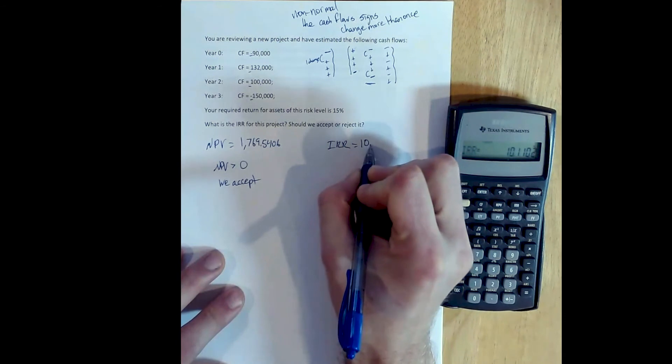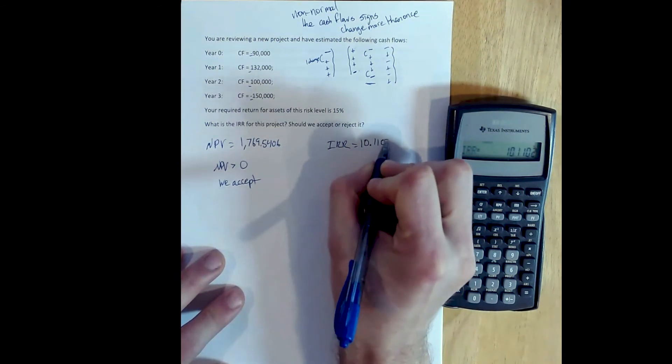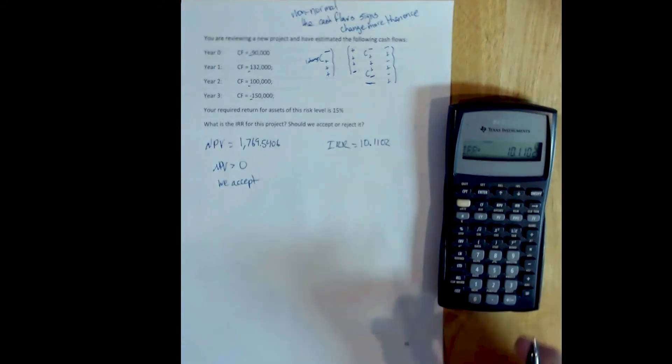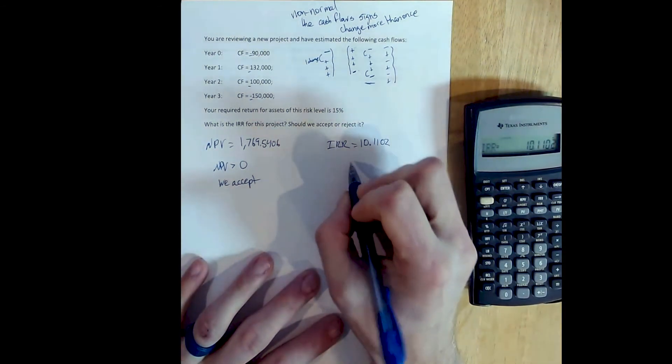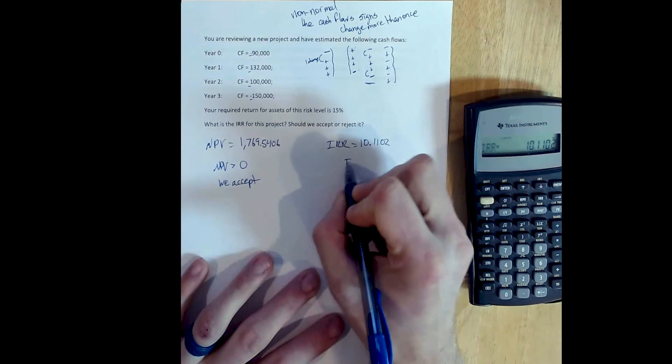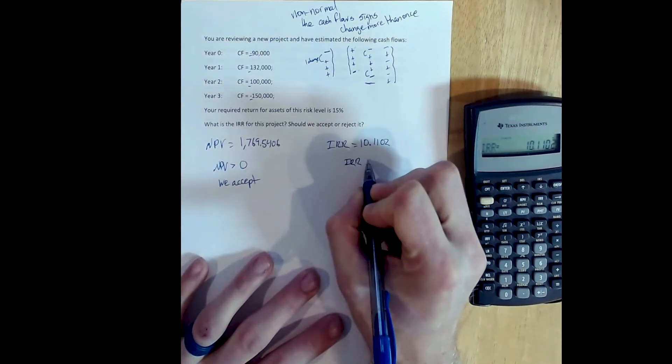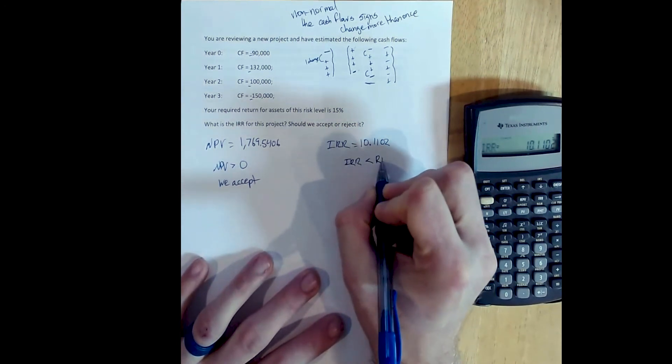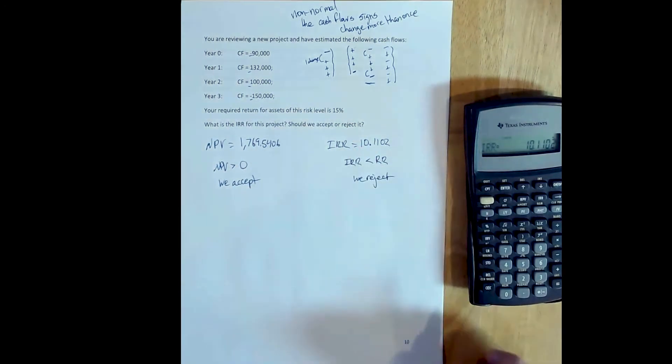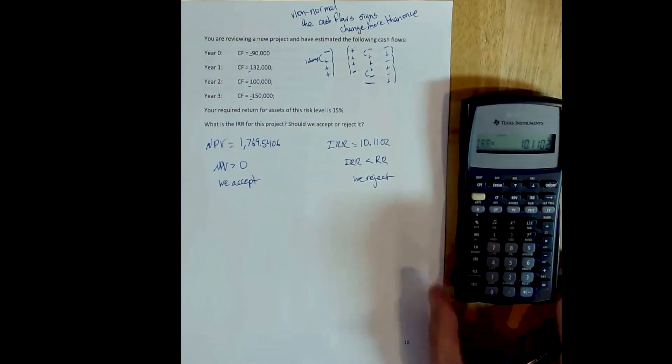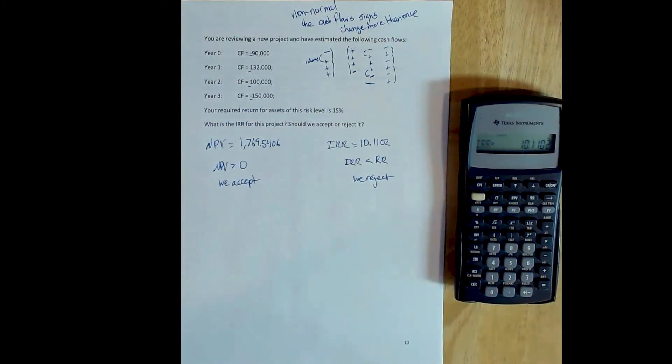But what we notice is when we solve for this, we get an internal rate of return of 10.1102%. In other words, based on the internal rate of return rule, the IRR here is less than the required return. And so we reject based on an internal rate of return rule. And this doesn't make any sense because the internal rate of return should agree with the NPV.